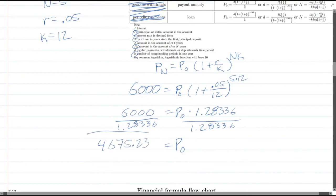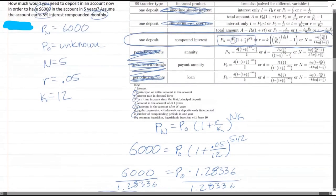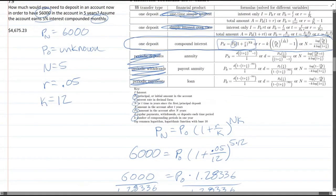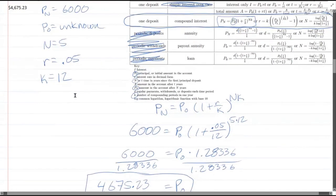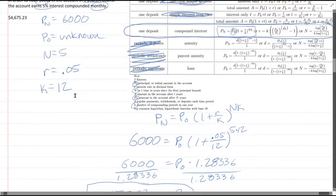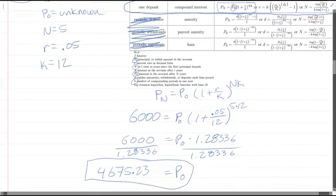So that is our initial amount we would need. And let's go ahead and check that. 4,675.23. All right, and that is right up there. So that is our solution for this problem.